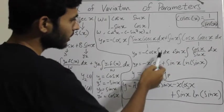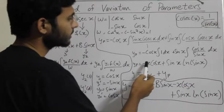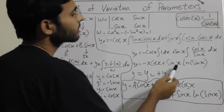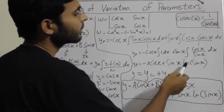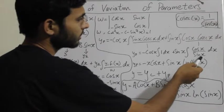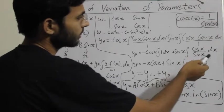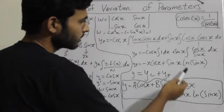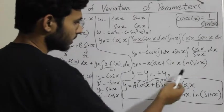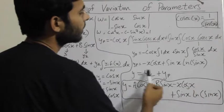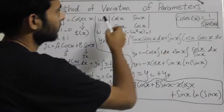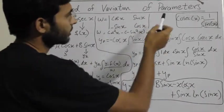Upon integrating, I get minus x cos x plus sin x ln sin x, because the derivative of sin x is present in the numerator. This is the final yp I get after solving all this by method of variation of parameters.